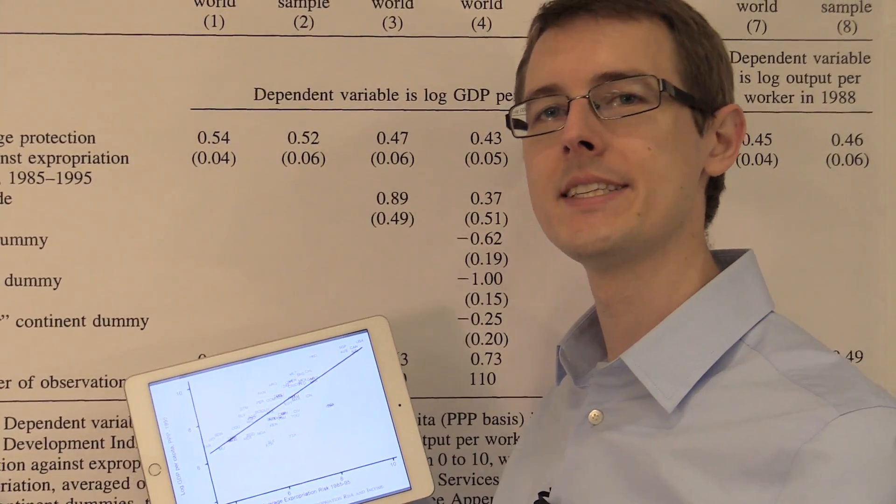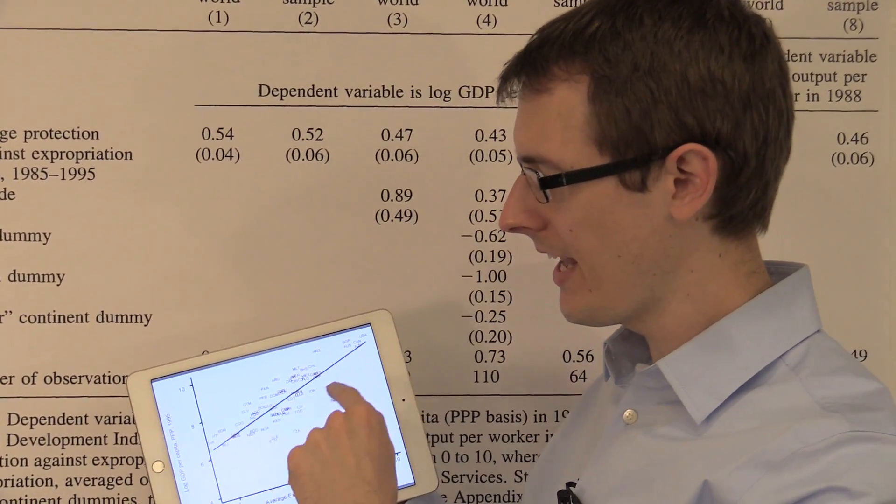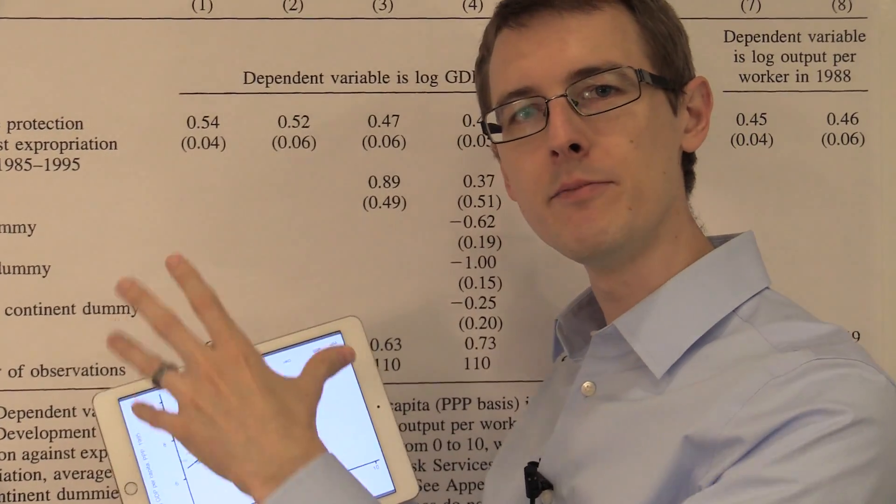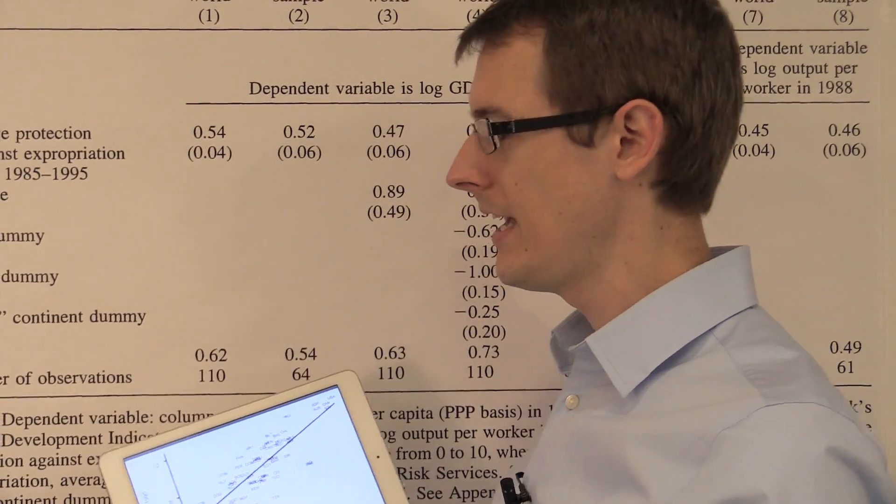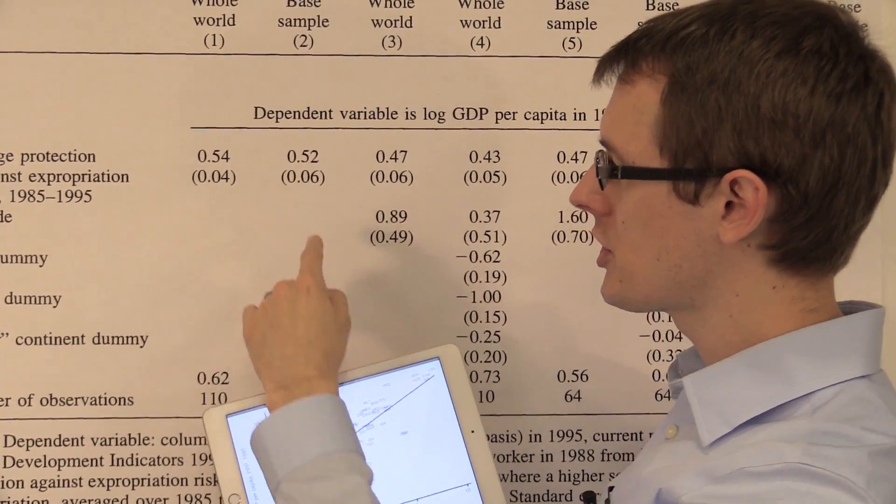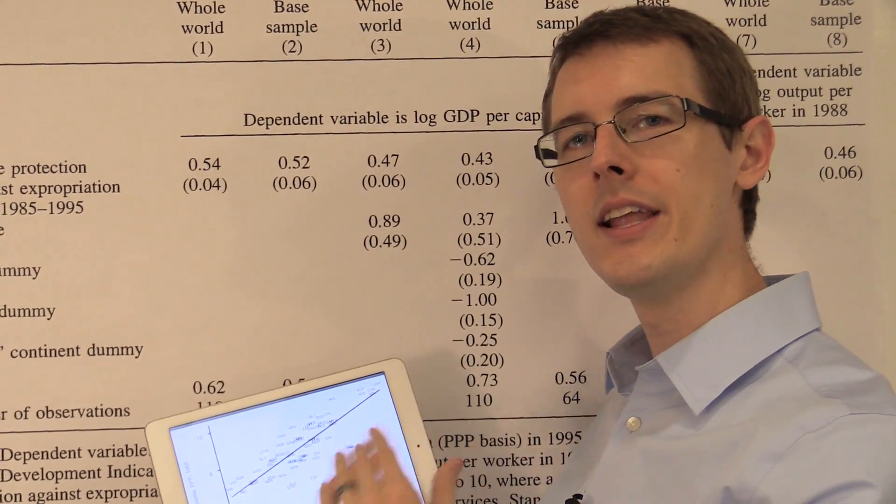That's what the OLS estimator does. It finds that line that goes right through the cloud in the sense of minimizing the squared distance. And that's what this number here is. It's just the slope of that line.